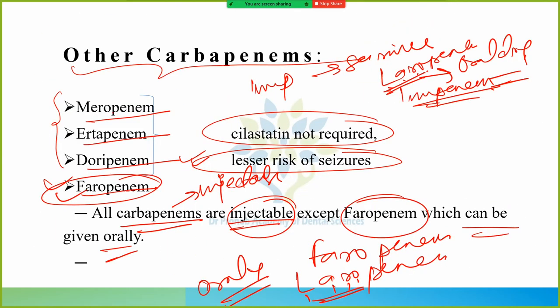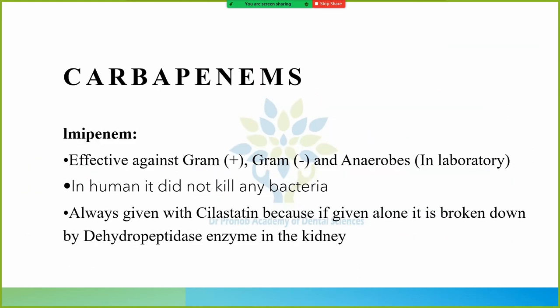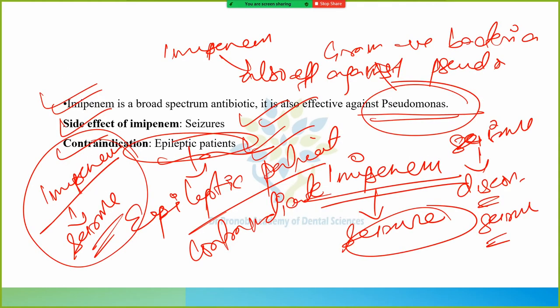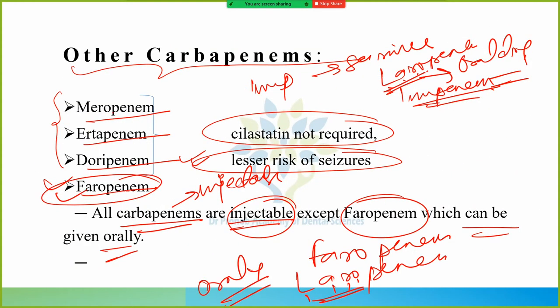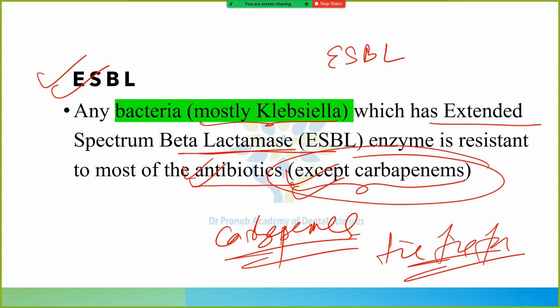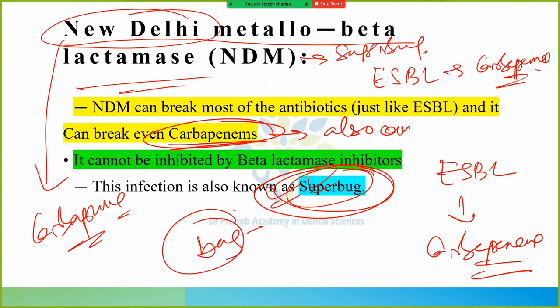Quick revision: Imipenem must be given with silastatin. Its side effect is seizures. To address seizures, we developed meropenem, ertapenem, doripenem — and faropenem which is oral. Extended spectrum beta-lactamase: no antibiotic works except carbapenem. But carbapenem fails against New Delhi metallo-beta-lactamase. Remember: C for carbapenem and C for Colistin — Colistin works against NDM where carbapenem fails.